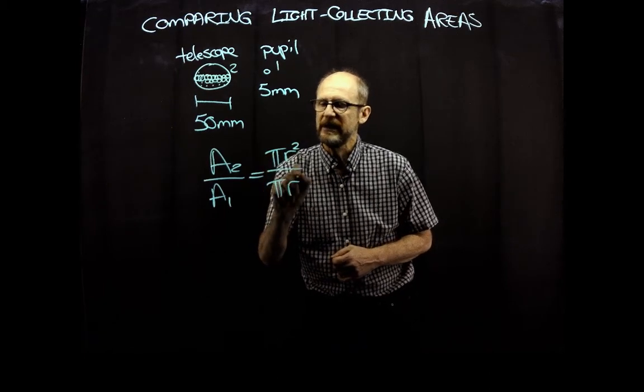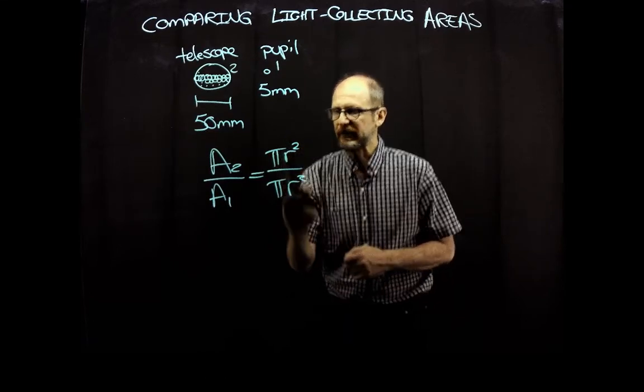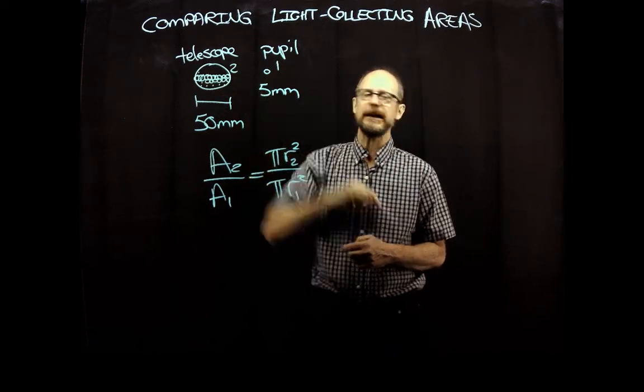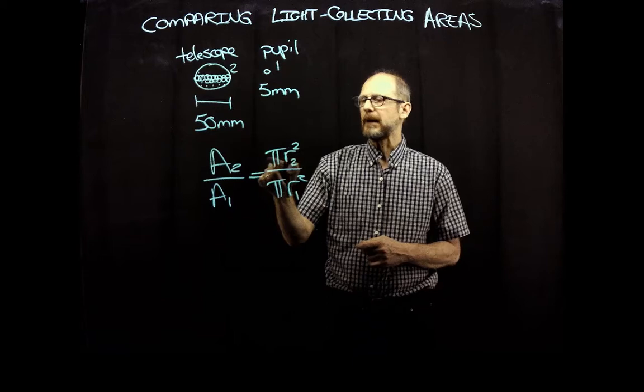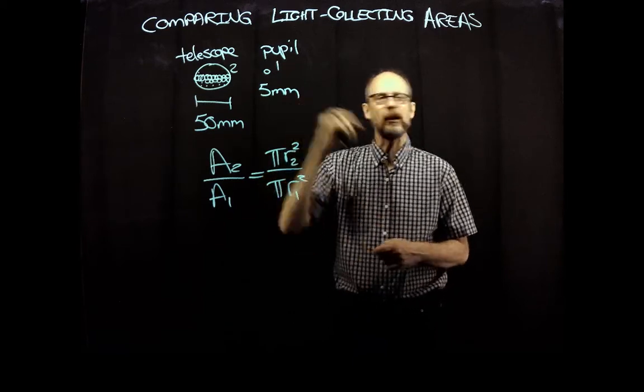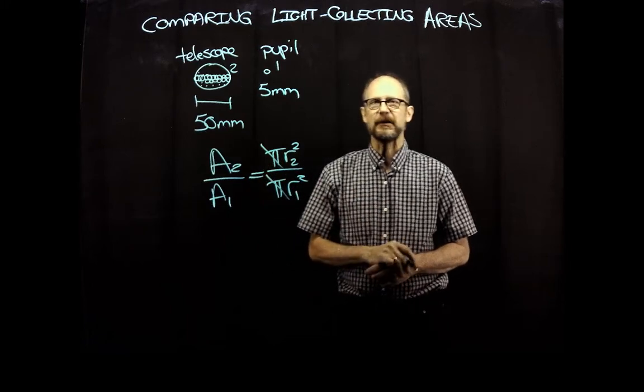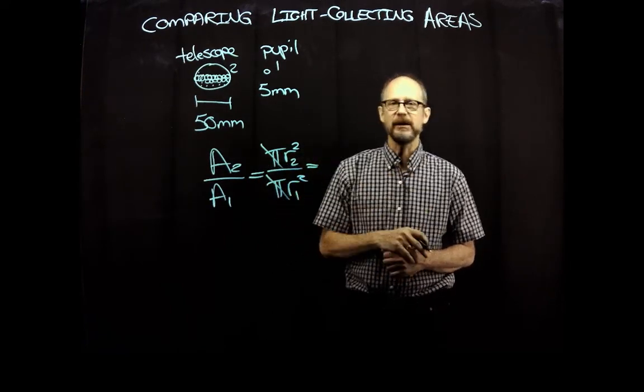Now the area of a circle is pi r squared. And so this ratio is pi r squared over pi r squared, but these are different radii. So I'm going to use subscripts here: r2 and r1 refer to the radii of circles two and circle one. So we've got pi r2 squared over pi r1 squared. It's the same pi on the top and bottom, so we can cancel those and we're left with r2 squared over r1 squared.